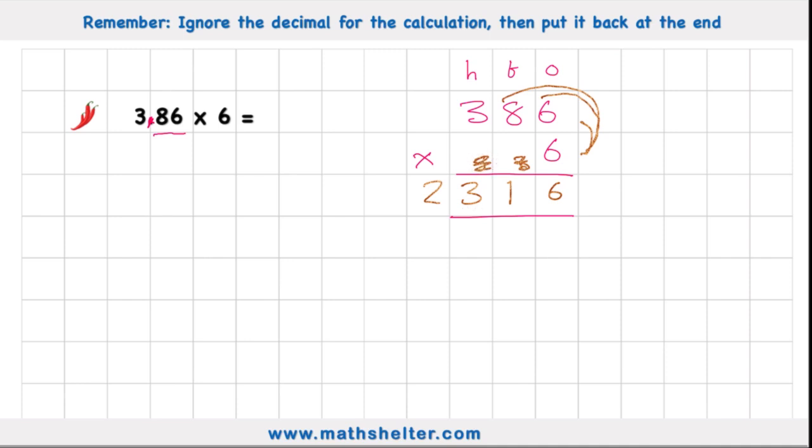But remember, this time I had not 1, but 2 numbers after my decimal that I ignored. So now I need to bring my decimal 1, 2 numbers back. So now I have a final answer of 23.16. So 3.86 times 6 is 23.16.